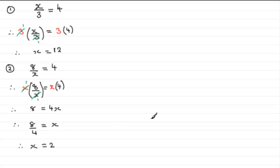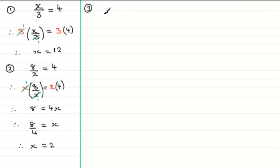Let's develop this further with a third example. We'll take an equation where we've got (5x minus 3) divided by 4, which equals 2. This is one term containing a fraction with 4 in the denominator.